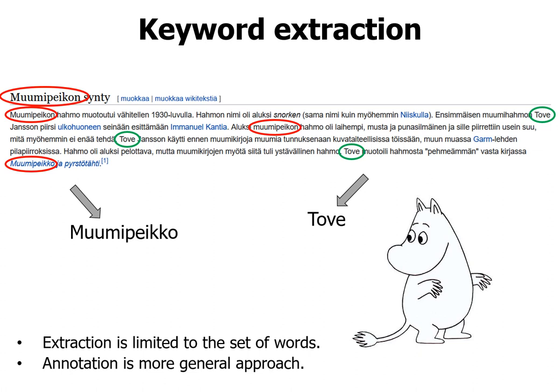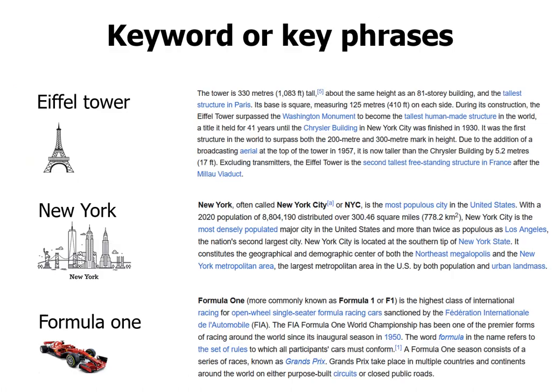Another keyword must be Tuve Jansson, the author, or just her first name Tuve. So in general, the extraction is just a special case of a more general annotation problem — what are the best keywords to describe the content — while we focus only on those words that we can actually find on the web page. It's a slightly simplified problem.